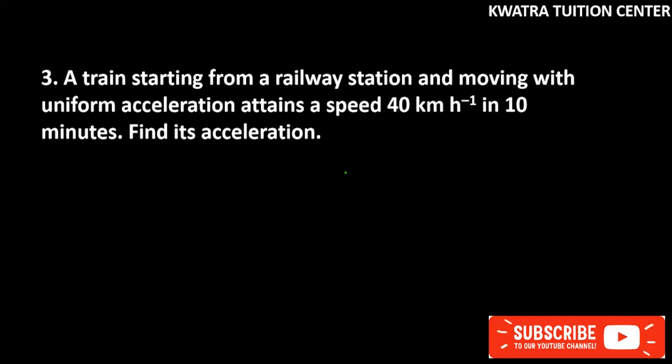Question number three says a train starting from a railway station and moving with uniform acceleration attains a speed of 40 km per hour in 10 minutes. Find its acceleration.